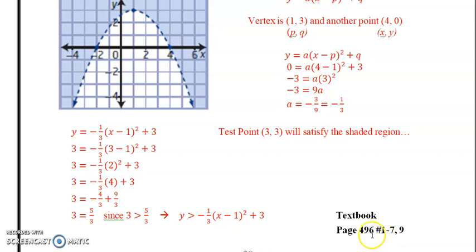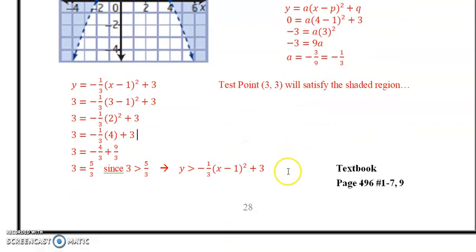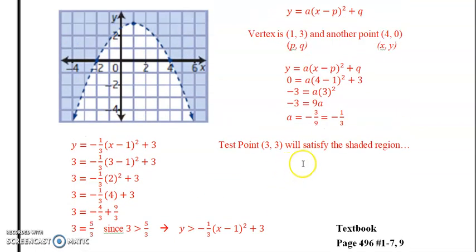So there's the textbook questions, page 496, numbers 1 through 7 and number 9, to practice with some of these shaded regions. So that's it for chapters 8 and 9. We're all finished there. We will continue on next with chapter 5 when we're looking at radicals. I hope everybody's doing well, and we'll see you guys again soon.